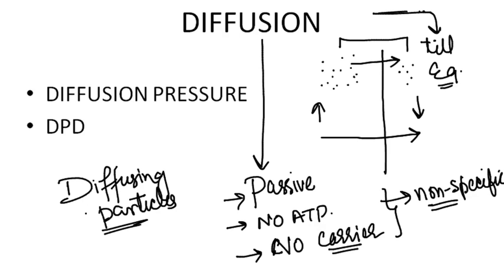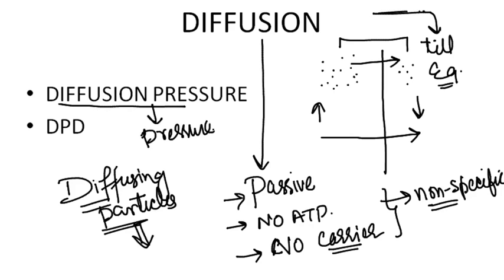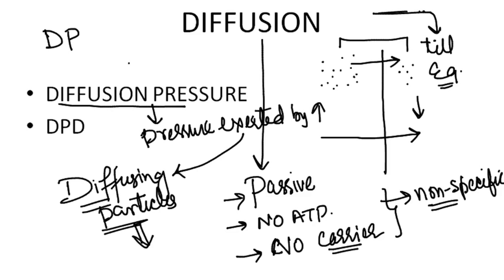The pressure exerted by the diffusing particles is called diffusion pressure (DP). Diffusion pressure is maximum for pure water.